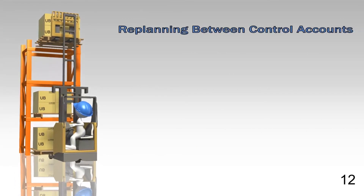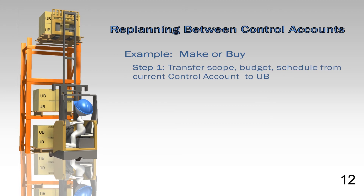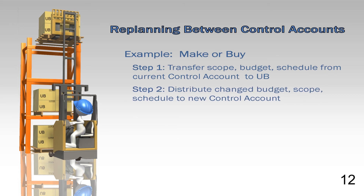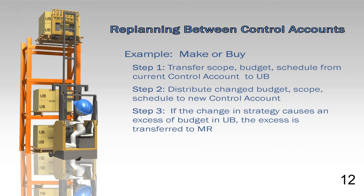When the contractor decides to re-plan effort between control accounts, UB is also involved in the process. For example, a contractor may determine that scope originally planned for an item to be made in-house now needs to be purchased from a vendor. The first step would be to transfer the scope, schedule, and budget associated with that effort to UB. The second step would be to distribute the re-planned scope, schedule, and budget to the new control account based on the schedule and budget needs associated with the purchase. The last step is to determine if there is any excess budget remaining in UB because of the re-plan. If so, that budget would be transferred to MR since there no longer is any scope associated with it. Conversely, if additional budget is needed, the CAM may need to request MR allocation to the control account.